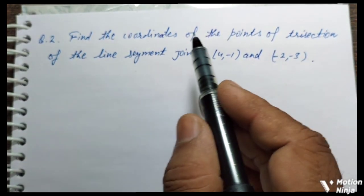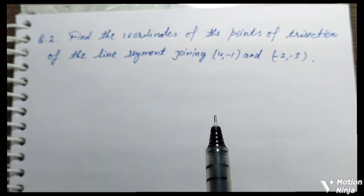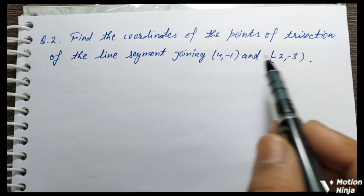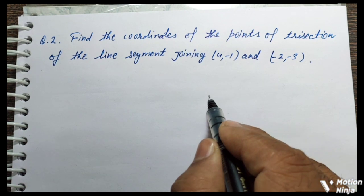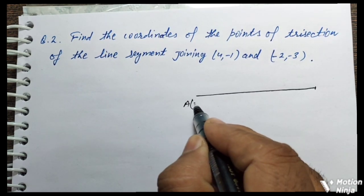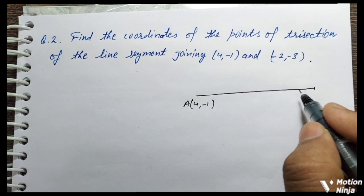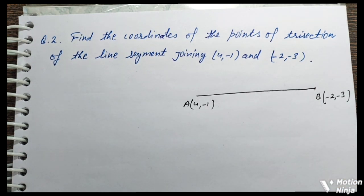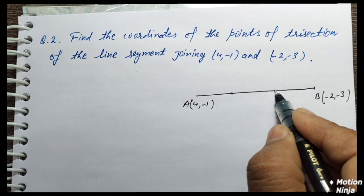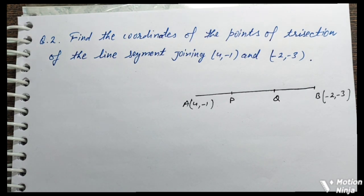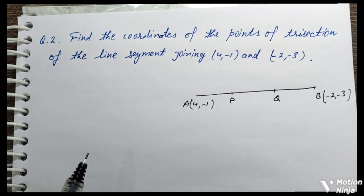Second question: find the coordinates of the points of trisection of the line segment joining point A(4, -1) and B(-2, -3). We need to find the points that divide this line segment into three equal parts. Let's call these points P and Q — they trisect the line segment AB.